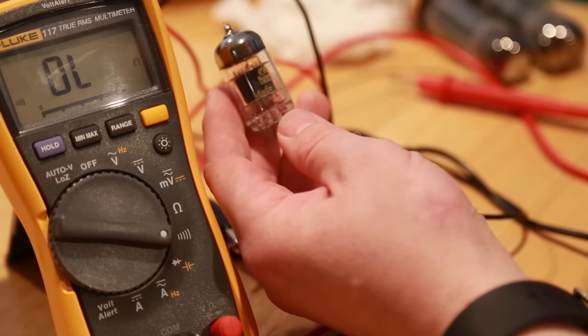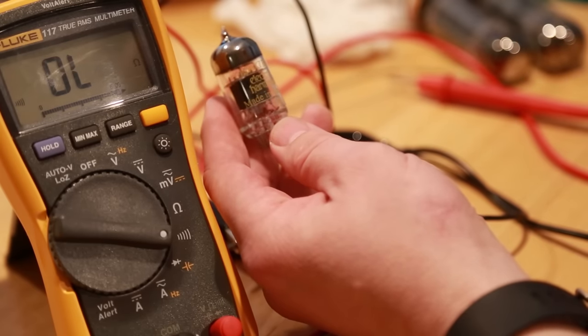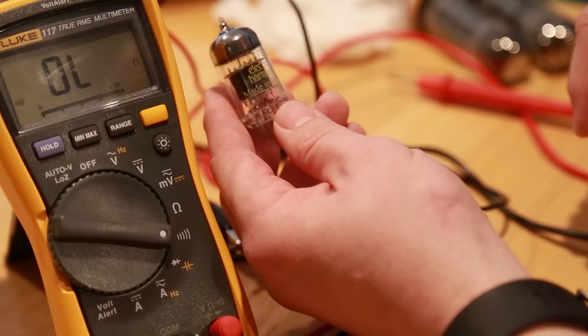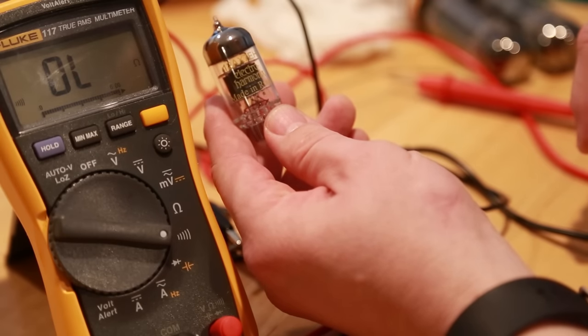So there you have it. We may cover a little bit more looking here for a minute afterwards about a data sheet and how to look this up, but that's the gist of how to test your tubes with a multimeter to ensure that you don't have any shorts that are bad or to make sure that your heaters are working. Thanks.